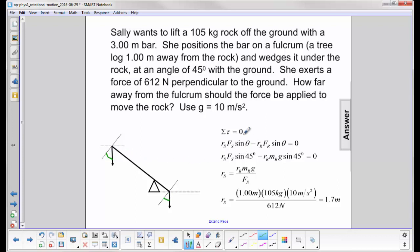So when we go to our sum of the torques equals zero, we have Sally trying to move in a counterclockwise direction, so that's a positive torque. The rock is trying to move it in a clockwise direction, that's a negative torque.